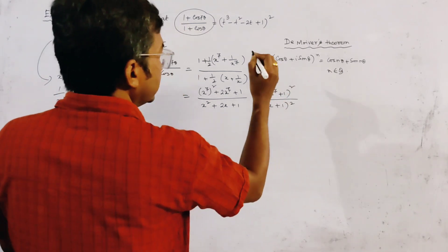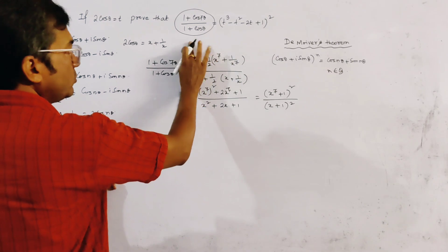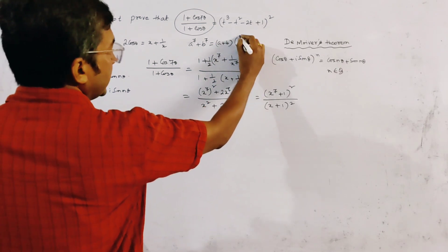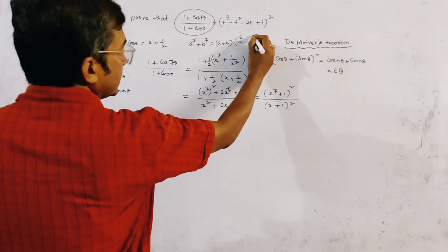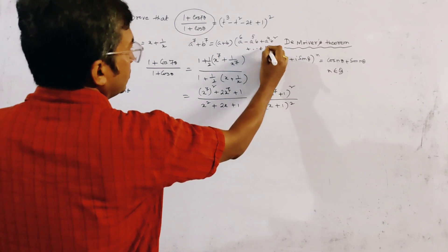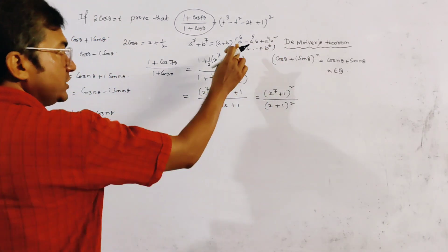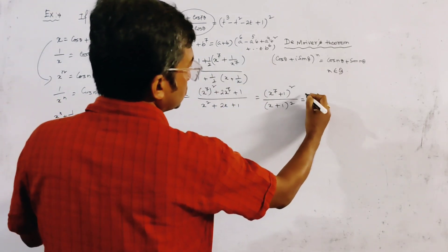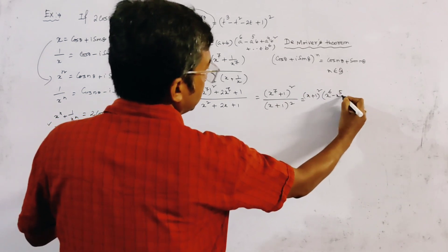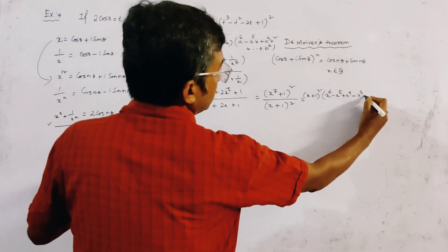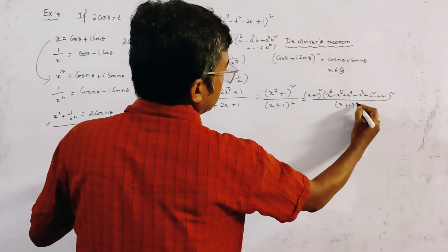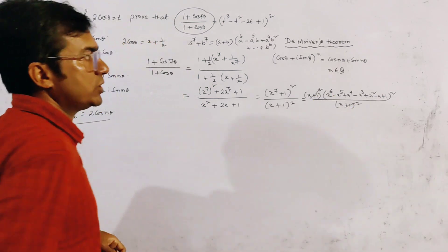We now apply the algebraic formula for a⁷ + b⁷. Using this, x⁷ + 1 = (x + 1)(x⁶ - x⁵ + x⁴ - x³ + x² - x + 1). So we get (x + 1)²·(x⁶ - x⁵ + x⁴ - x³ + x² - x + 1)² divided by (x + 1)², and the (x + 1)² terms cancel.